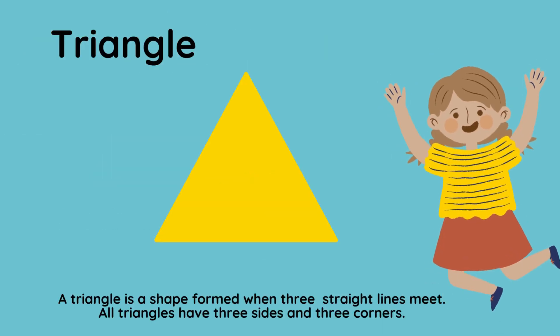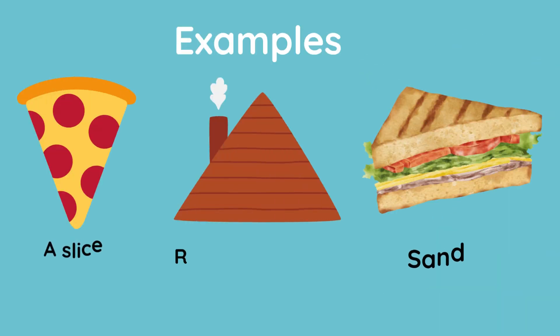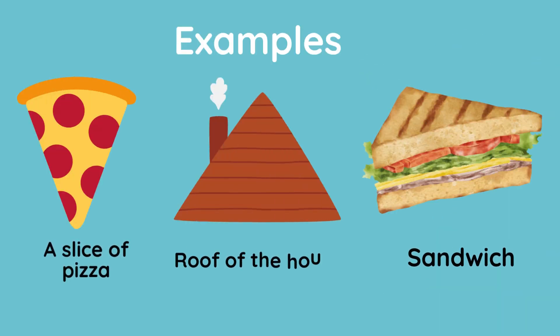Triangle. A triangle is a shape formed when three straight lines meet. All triangles have three sides and three corners. Here are some examples that are triangle in shape: a slice of pizza, roof of the house, sandwich.